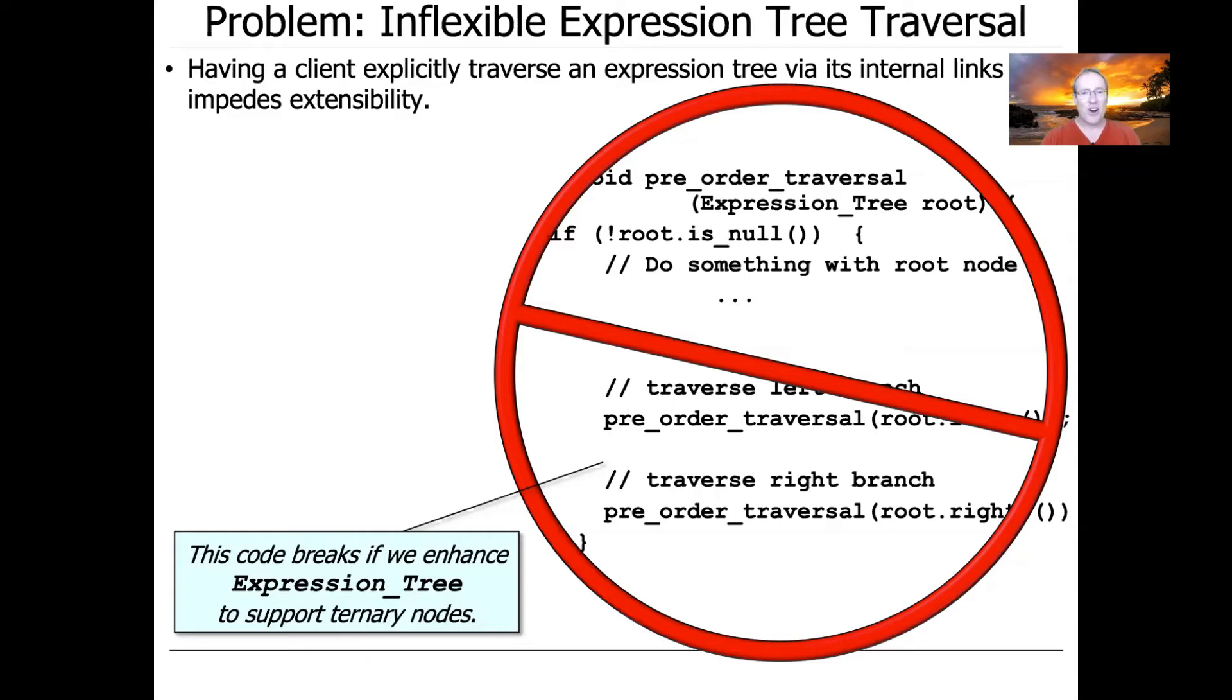Because the minute we make any changes to the representational details, we end up breaking a lot of stuff. So it's really not a good idea to externalize the representational details, even if we abstract it to some extent by using methods. Because when you start making changes to the representation, you break things.